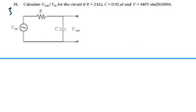Here's problem 3331. Calculate Vout over Vin for the circuit if R is equal to 2 kilo ohms, C is 0.02 microfarads, and V is equal to 140 volts sine 50,000 T.